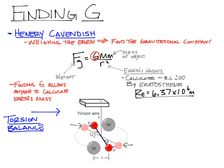He takes these two masses, balances them from the wire, and then brings another two masses close to them. The gravitational attraction between these masses causes them to twist that wire a little bit. Cavendish measures how much twist there is, and he knows how much force that corresponds to, and how far apart the masses are. So he has all of his pieces — he knows the force, he knows the masses, he knows how far apart they are — so he can find G.